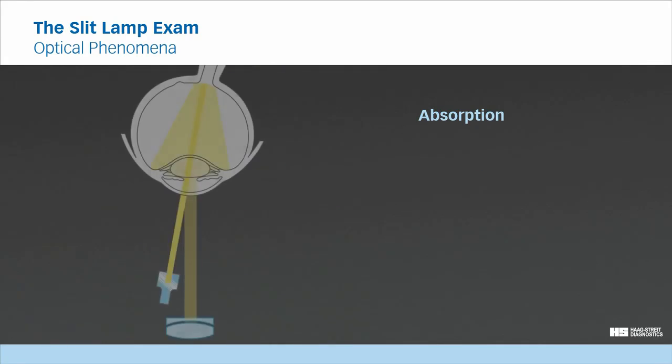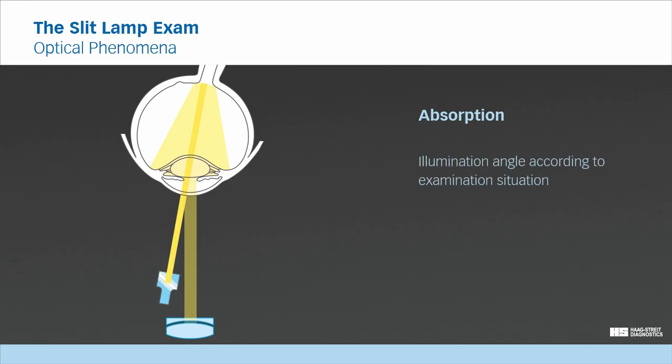To achieve this type of illumination, light is reflected from a more posterior structure such as the retina, the iris, or the lens. Like for the refraction phenomena, the illumination angle depends on how the reflecting structure is to be illuminated in order to create the desired absorption phenomena.